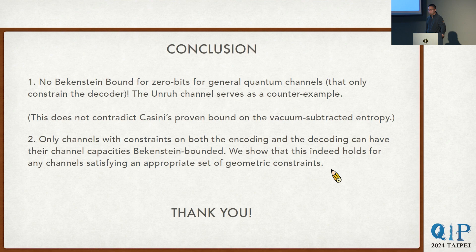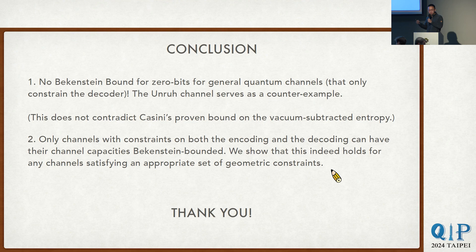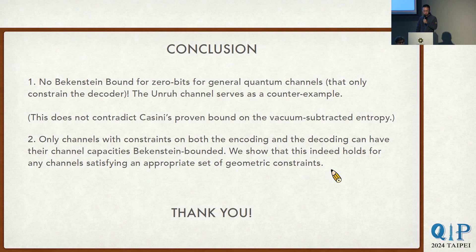Question: You showed that zero bits can violate the Bekenstein bound, and sending qubits they don't. If you go in between to some general notion of an alphabet, do you have a Bekenstein bound, or is there some threshold? Answer: I removed a slide about alphabets. But yes, generally for alphabets you also have violations. If you fix a dimension D, that puts a threshold on the largest alpha for which you have a violation. But in general, alphabets also violate the Bekenstein bound.